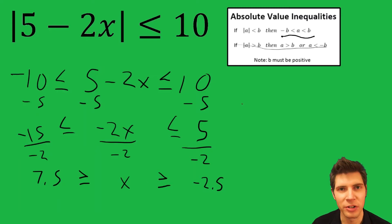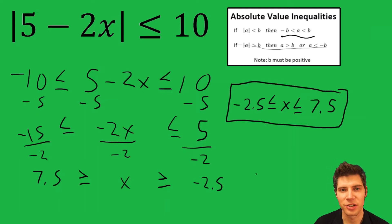Usually you write the small number on the left, so we'll rewrite it real quick. Negative 2.5 less than or equal to X less than or equal to 7.5. And that's the answer to the question.